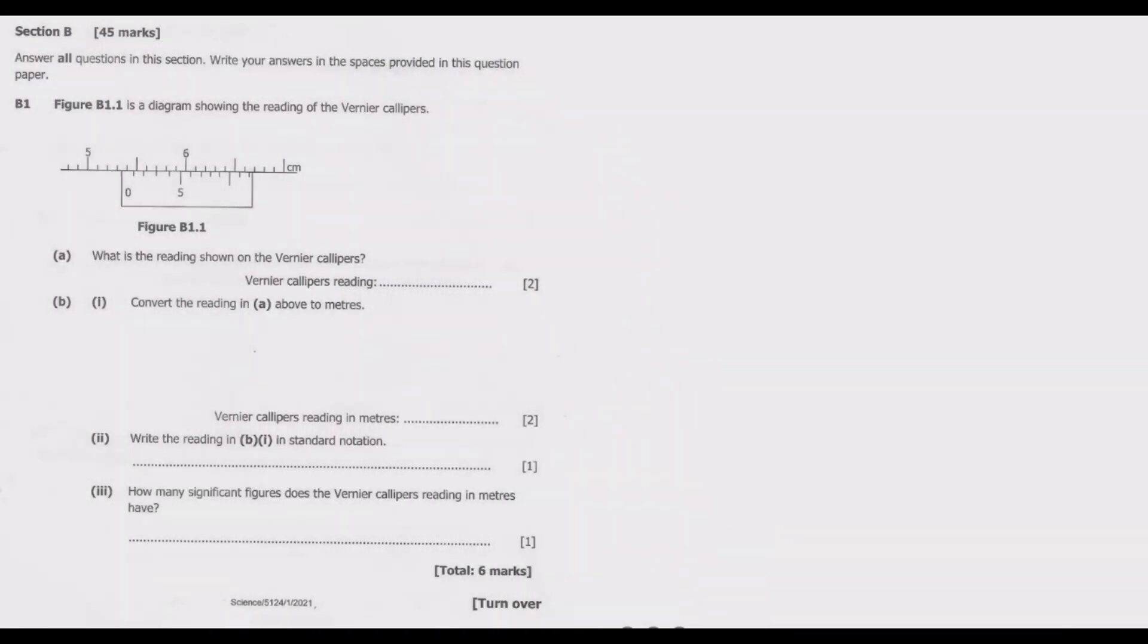Welcome viewers, so we continue looking at the 2021 GCE science paper 1, which is basically physics. Now we are looking at section B. B1: Figure B1.1 is a diagram showing the reading of the vernier calipers. What is the reading shown on the vernier calipers?